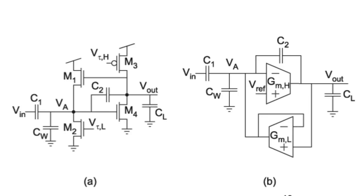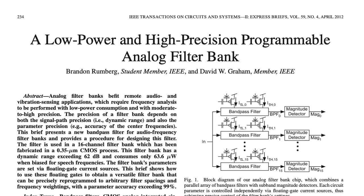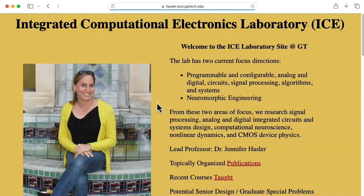Hi there. My name is Aaron Lanterman. I'm a professor of electrical and computer engineering at Georgia Tech, and these are bandpass filter circuits from a paper titled 'A Low Power and High Precision Programmable Analog Filter Bank' by Brendan Rumberg and David Graham. I'll leave a link to this paper in the description below. I learned about this circuit during the spring 2024 semester when sitting in on the Neuromorphic Analog VLSI class taught by my colleague Jennifer Hassler.